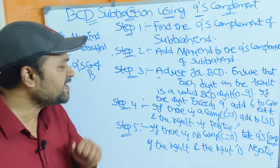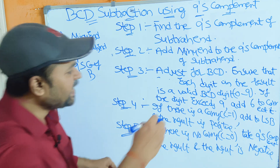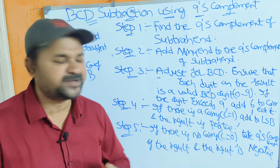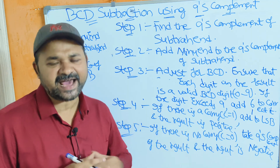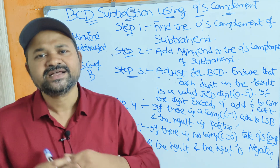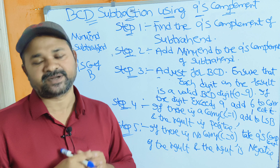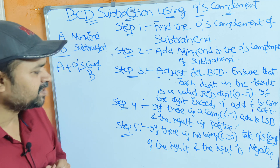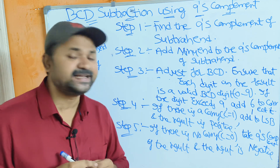Step 4: if there is a carry, that is if C equals 1, then add that carry — add 1 — to the least significant bit of the result, and the result is a positive number. Step 5: if there is no carry, that means if C equals 0, then take the 9's complement of the result and the result is negative.